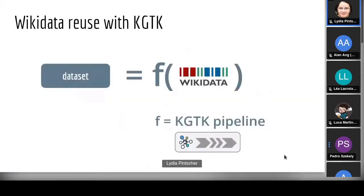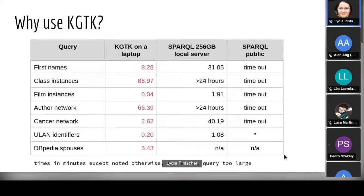The idea is that we implement the transformation function F as KGTK pipelines, so all our transformations are basically pipelines of these commands.